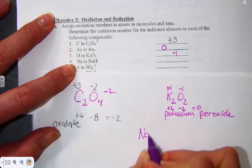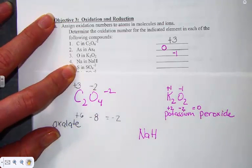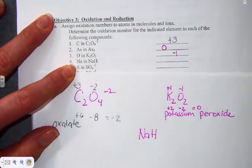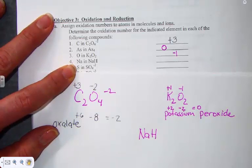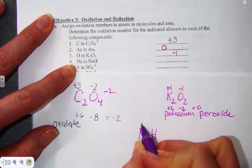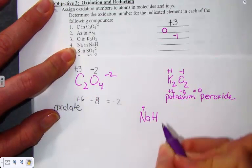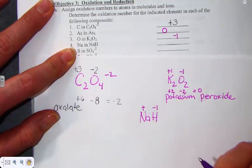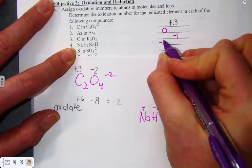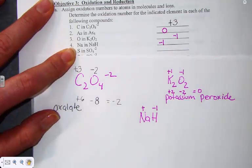In the next compound, NaH, sodium hydride. This goes to rule 4 for assigning oxidation numbers. Hydrogen is assigned a plus 1 when hooked to non-metals, and it's assigned a negative 1 when hooked to a metal. In this case, sodium carrying a positive 1 charge makes hydrogen a negative 1 charge. The hydride ion is a minus 1.